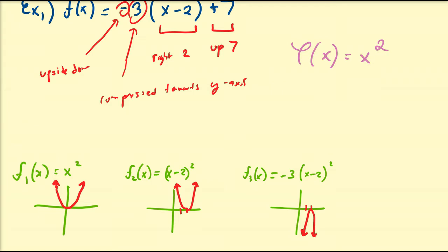And then finally f(x), which is our main curve — we're going to shift that up 7. So if the vertex is at (2, 7), it's going to have that type of graph. It's a parabola flipped upside down, compressed towards its center axis, shifted to the right 2 and up 7. That's going to be our target graph.